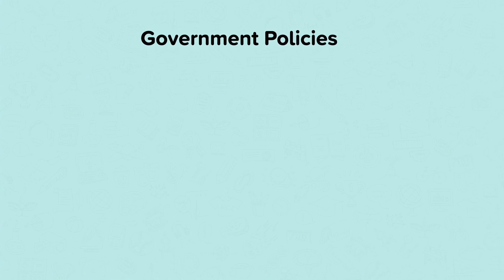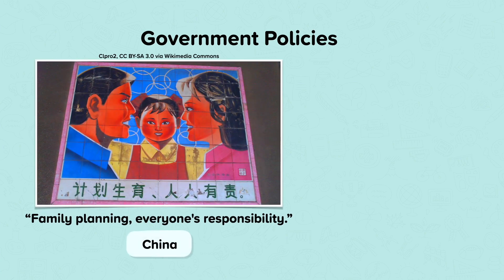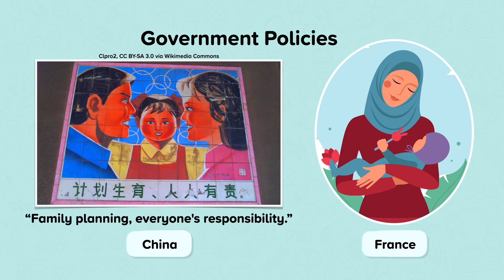Government policies can also affect birth and death rates. In some countries policies have attempted to control the rate of population growth by reducing birth rates. An example of this is China, where the one-child policy rewarded parents with only one child. This policy has, however, changed in recent years to encourage parents to have two children. In other countries, higher birth rates have been encouraged. An example of this is in France, where parents are given financial incentives, longer maternity and paternity leave from work, and a range of family-friendly policies to manage low population growth.